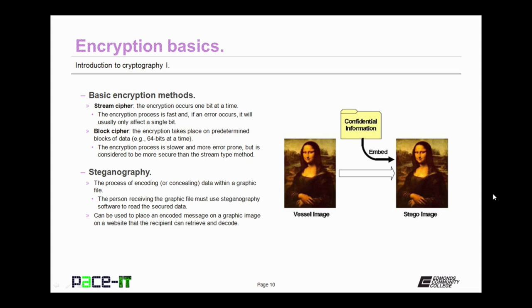There is steganography. This is the process of encoding or concealing data within a graphic file. The person receiving the graphic file must use steganography software to read the secured data. Steganography can be used to place an encoded message on a graphic image on a website that the recipient can then retrieve and decode.